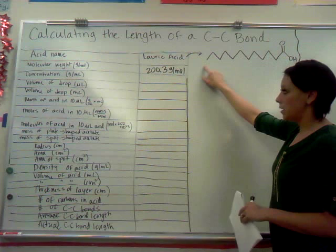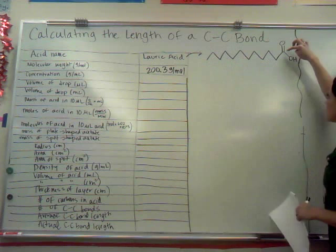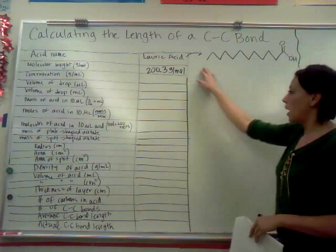Here is the structure for lauric acid. Every time these two lines intersect, or even the point on the end, these are carbon atoms here. You can see it's all carbon atoms with hydrogens, except until you get to one end where there's a double bond to an oxygen, and then an OH group right there.